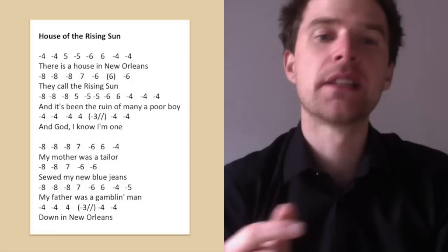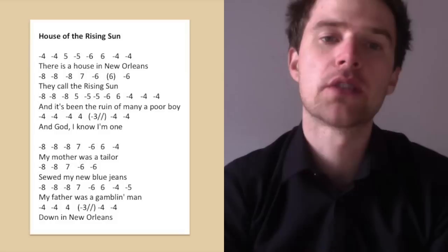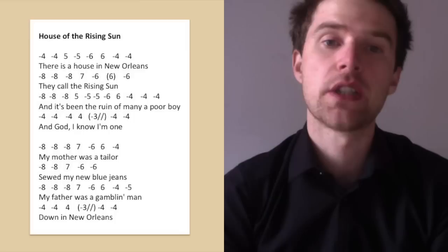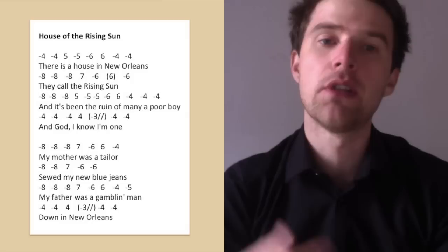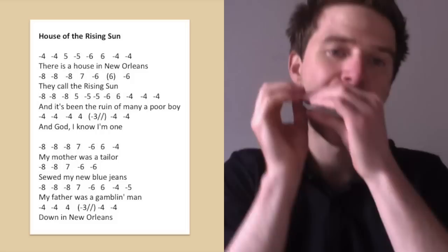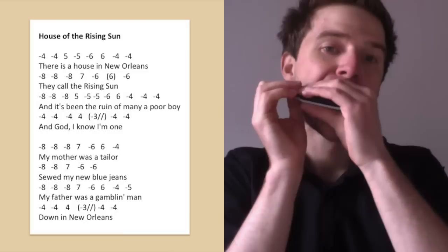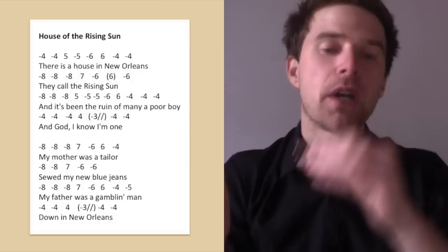Next line: eight draw, eight draw, eight draw. So it starts with three eight draws, just as the last one did. Five blow, five draw, five draw and then we have six draw, six blow, four draw, four draw, four draw. That's quite a long line, so I'll play through this a few times just so you get a sense of that.